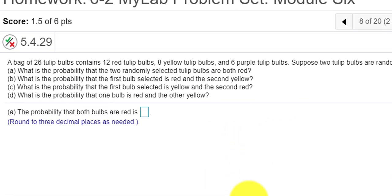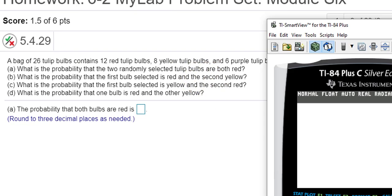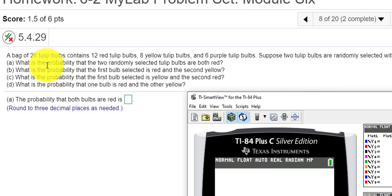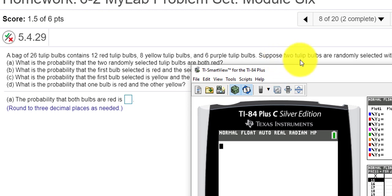Hello class, I'd like to create a video to help answer this problem that deals with probabilities. So we're given 26 tulip bulbs: 12 are red, 8 are yellow, 6 are purple, and it looks like we picked two bulbs randomly without replacement.